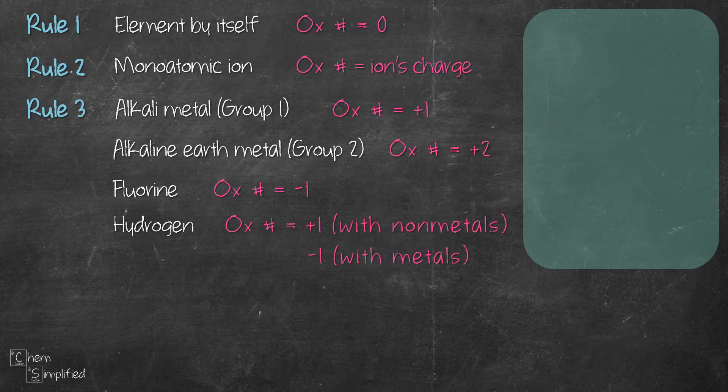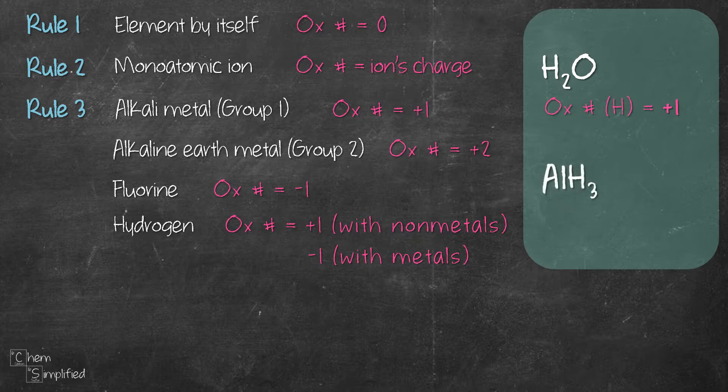Oxidation number of hydrogen is mostly plus one when it's combined with non-metals. However, if you find hydrogen combined with metals, then the oxidation number for hydrogen is going to be minus one. For example, if you have H2O, the oxidation number of hydrogen is plus one because oxygen is a non-metal. Whereas if you have AlH3, the oxidation number of H is going to be minus one because Al is a metal.